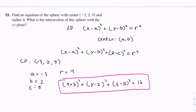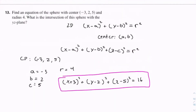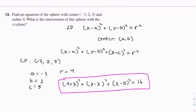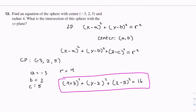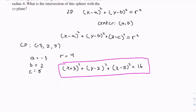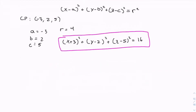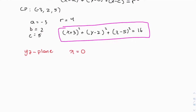Now this is asking what is the intersection of the sphere with the yz plane. We know that at the yz plane, x equals 0. So if we just substitute x equals 0 into this equation, we have the intersection.